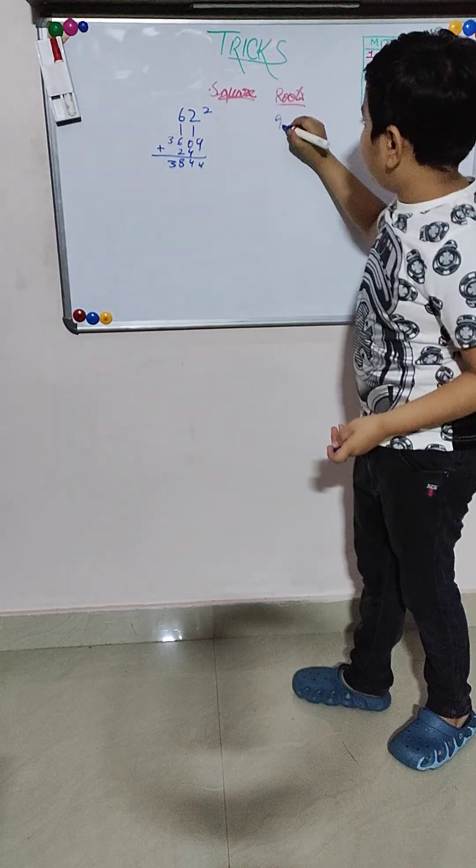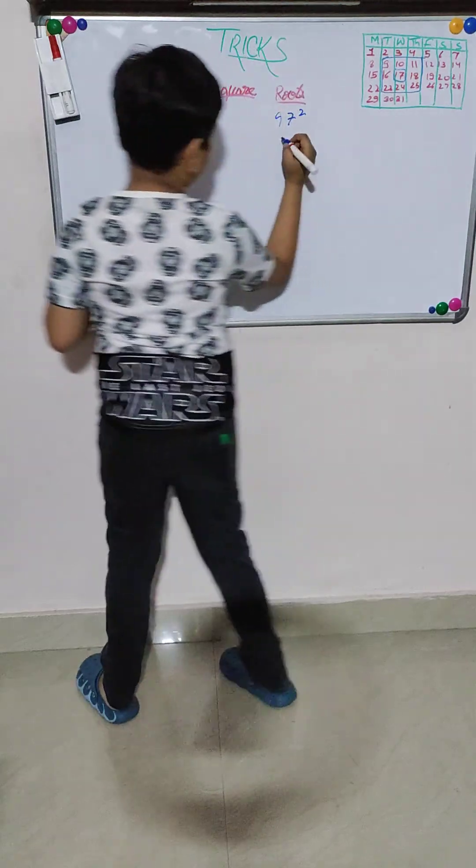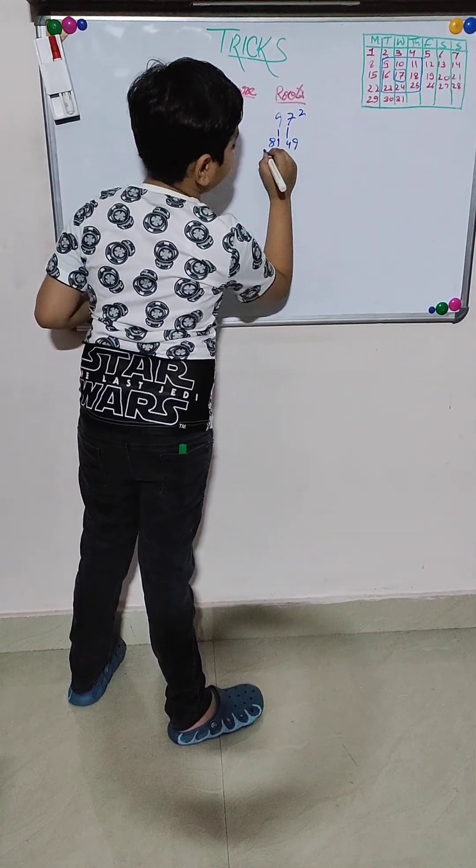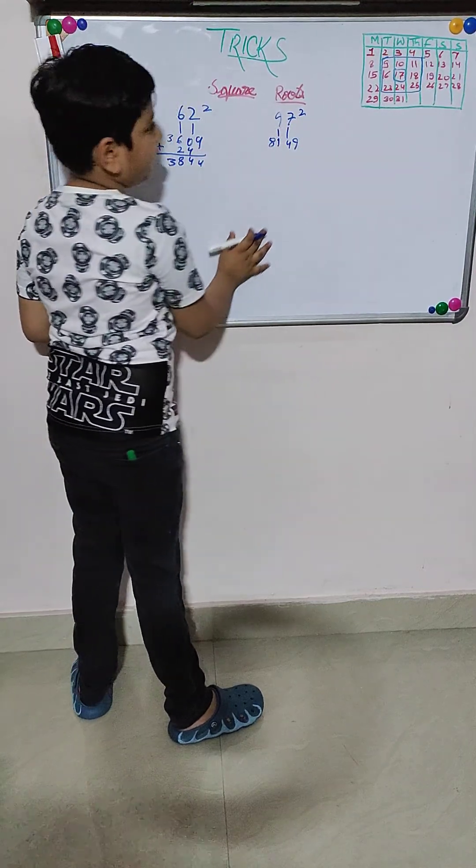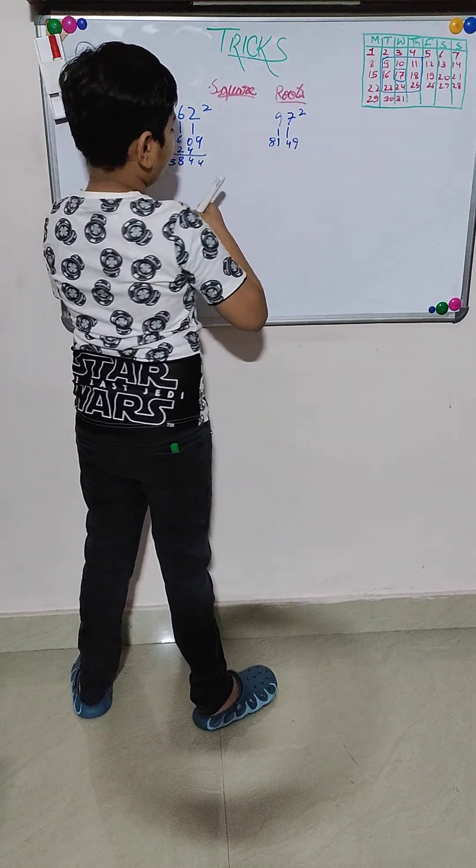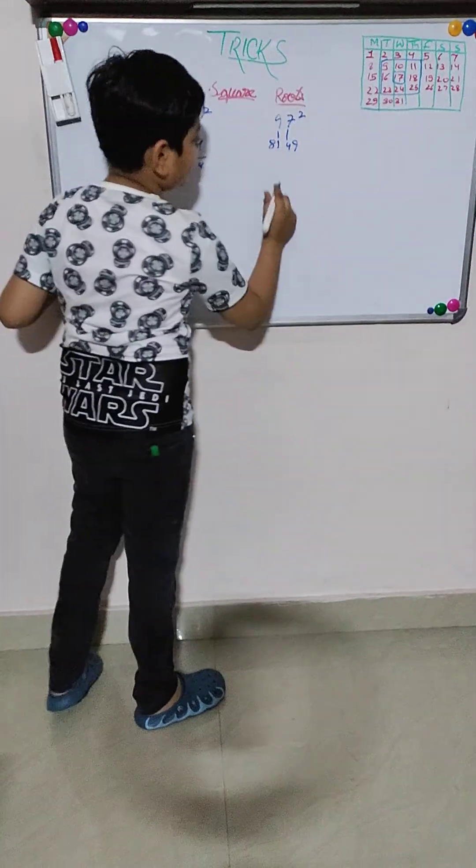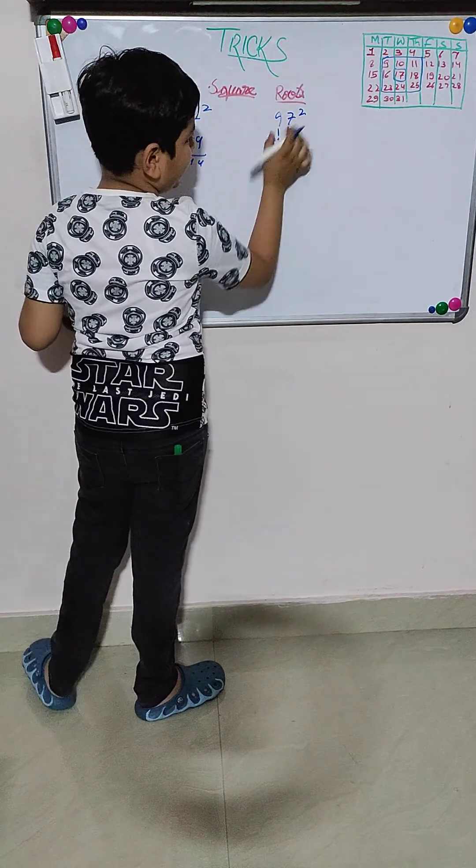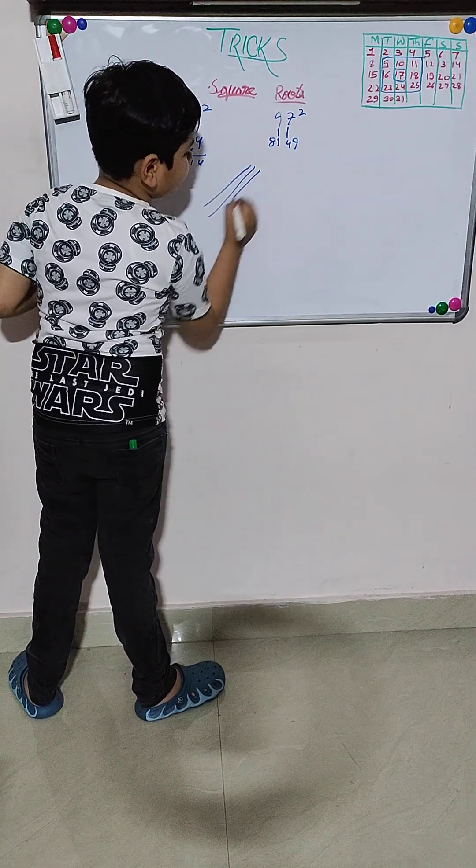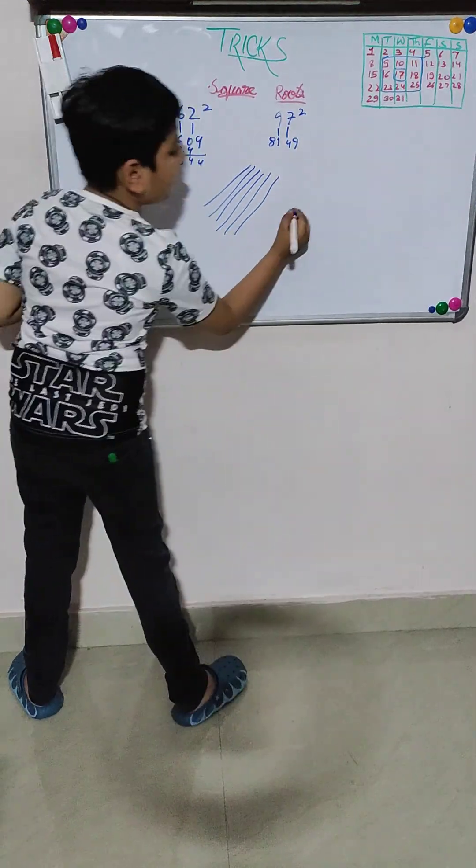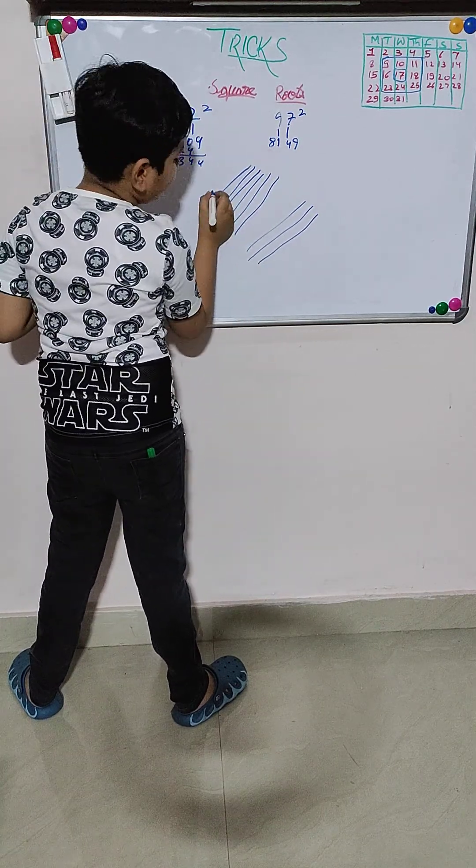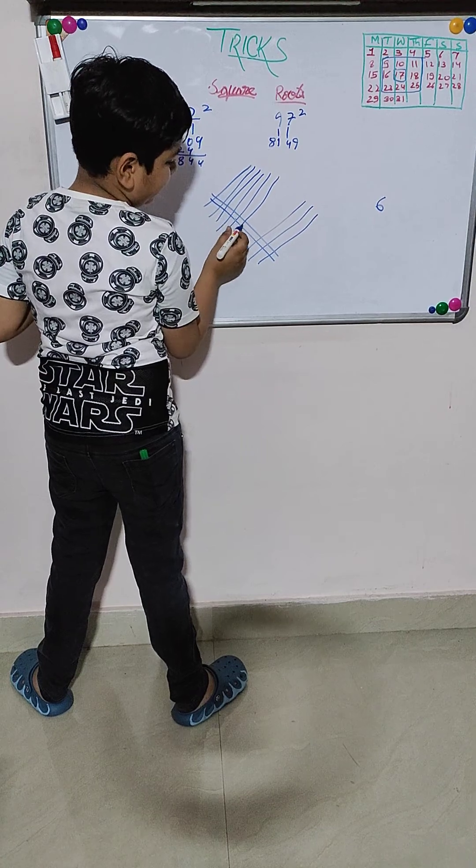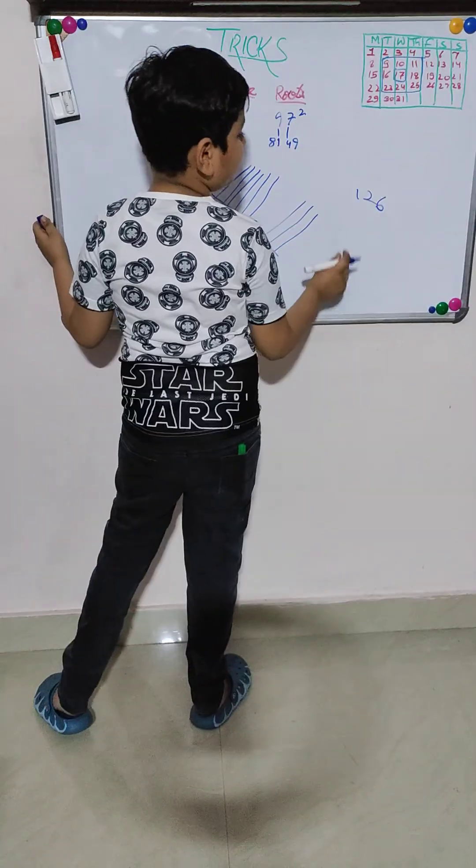So one more. 97 squared. 9 is 7 squared. 9 squared is 81. Then multiply 9 into 7 equals 63. 63 into 2 equals 126. We will do the trick. First 81, 9 into 7 is 63. So 9 into 7 is 63. Then we add 12, and get the answer 9,409.